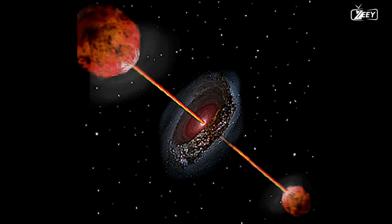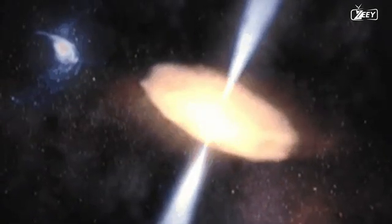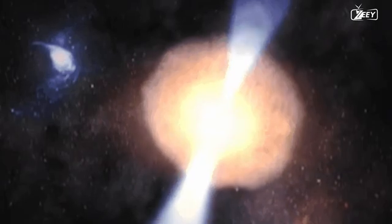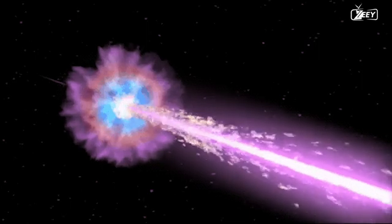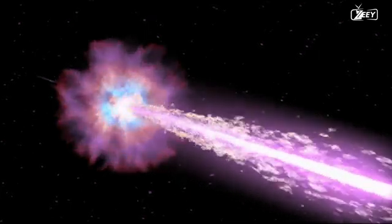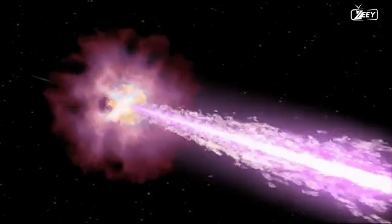We refer to these twin jets as radio galaxies if they are shooting straight up in the plane of the sky as seen from our planet. We refer to them as quasars if they are somewhat inclined towards us. Finally, we designate these aircraft as blazars if they are oriented in our line of sight and are pointing in our direction.